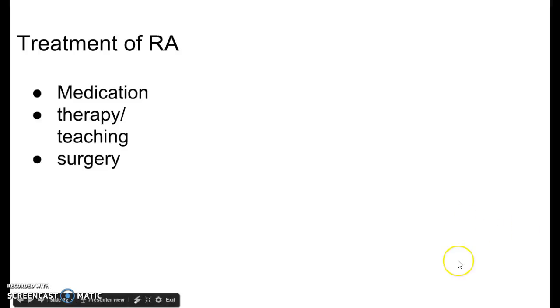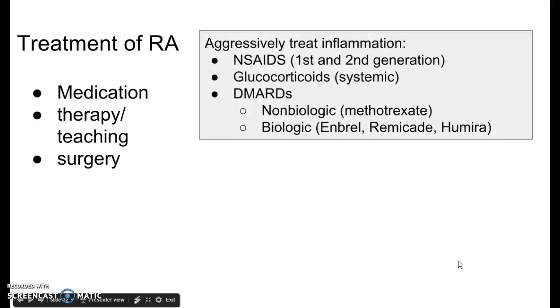I was talking about treatment of rheumatoid arthritis, and there are three basic categories. Like with osteoarthritis, we had medication, physical therapy, and surgery. With rheumatoid arthritis, we have medication, therapy — which I combine with teaching — and surgery. Forgive me if I get a little deep on medication, but I get really excited about this stuff because it gets into chemotherapy, which was my first job as an RN. So let's talk about medication real quick.